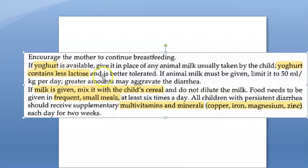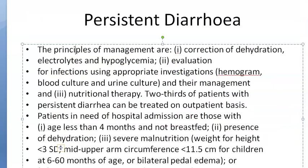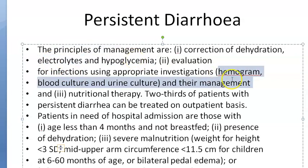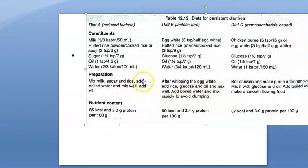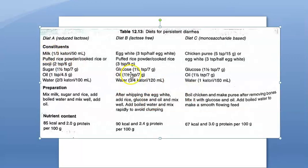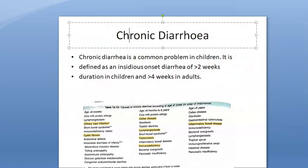For persistent diarrhea, give multivitamins and minerals including copper, iron, magnesium, and zinc to aid recovery. Apply the same principles: correct dehydration, electrolytes, and hypoglycemia with Ringer's lactate with 5% dextrose. Perform nutritional evaluation and provide reduced lactose diet — yogurt is recommended. Chronic diarrhea, by contrast, is insidious in onset — it does not start suddenly.